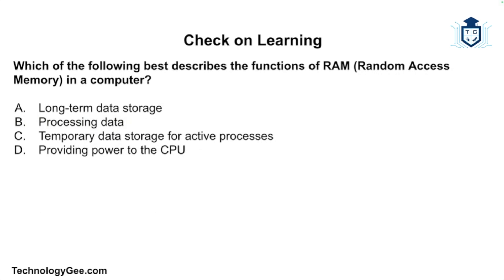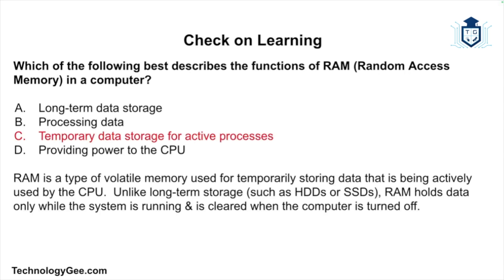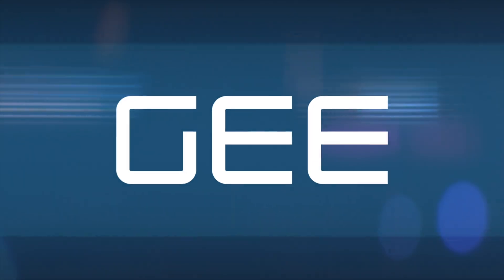Final question: Which of the following best describes the function of RAM or Random Access Memory — is it long-term data storage, the processing of data, temporary data storage for active processes, or providing power to the CPU? The correct answer is temporary data storage for active processes. RAM is volatile memory used for temporarily storing data being actively used by the CPU. Unlike long-term storage such as hard drives or SSDs, RAM holds data only while the system is running and is cleared when the computer is turned off.